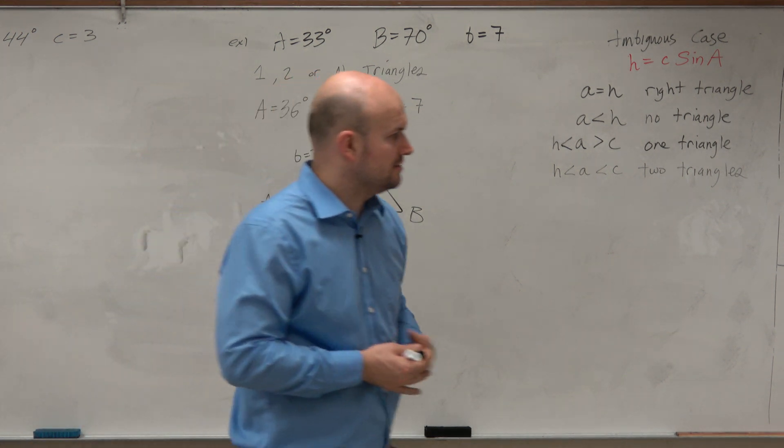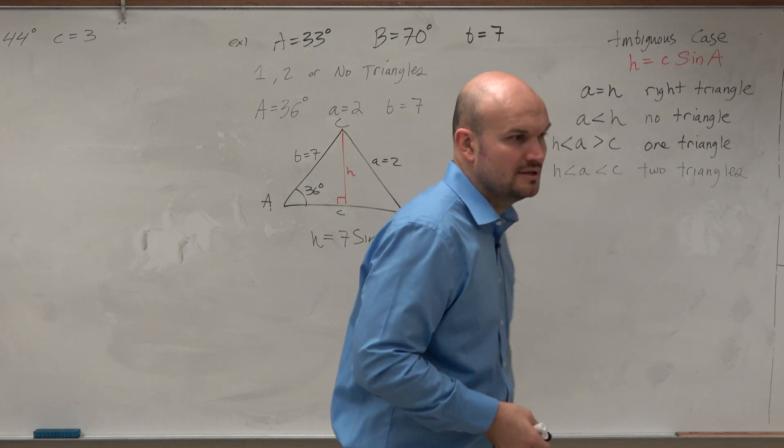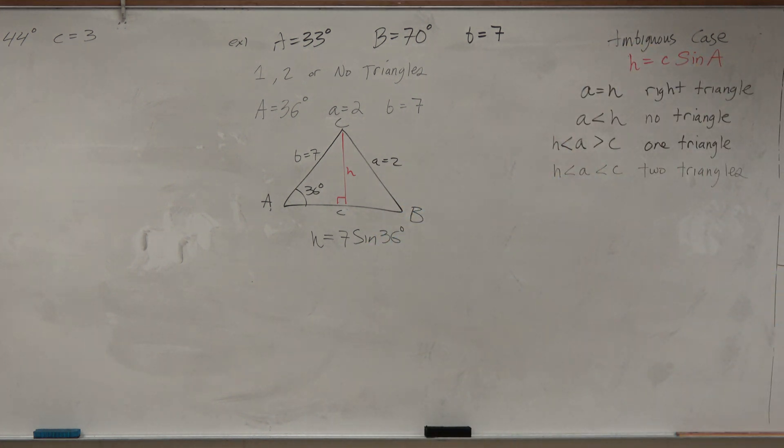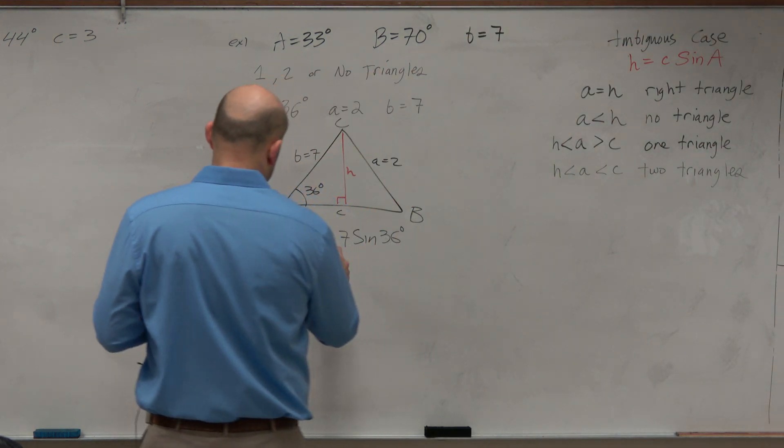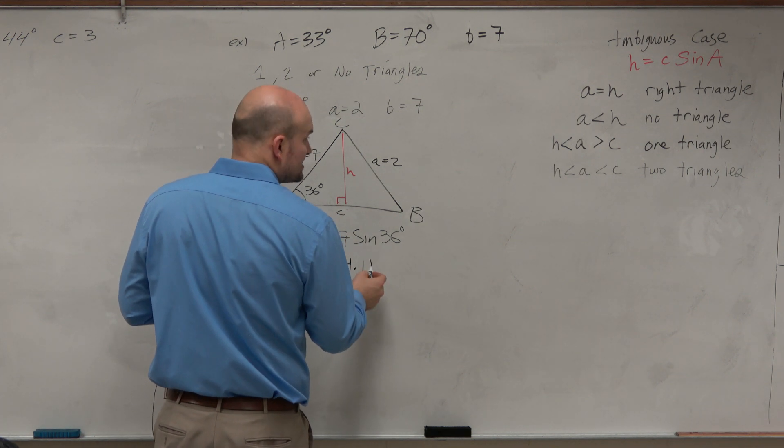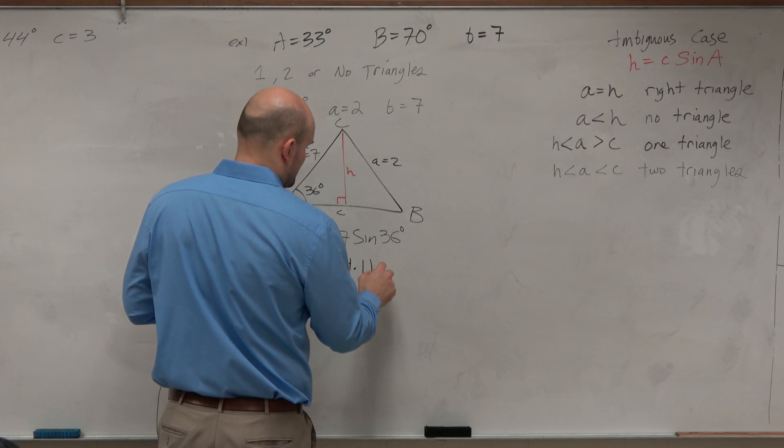So then we take our calculator and compute 7 times sine of 36. Does anybody have a calculator? I guess nobody's computing. What'd you get? I got 4.11. What's the third one? Just the fourth? Four. Okay.